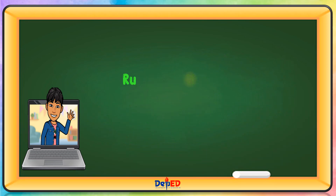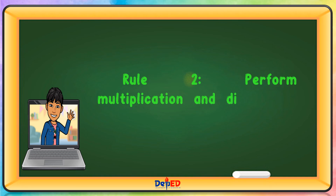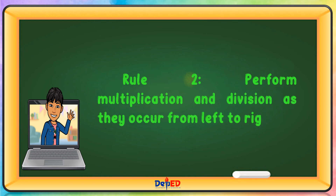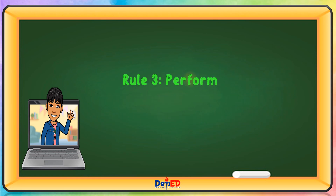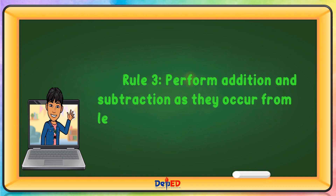Rule No. 2: Perform multiplication and division as they occur from left to right. Rule No. 3: Perform addition and subtraction as they occur from left to right.